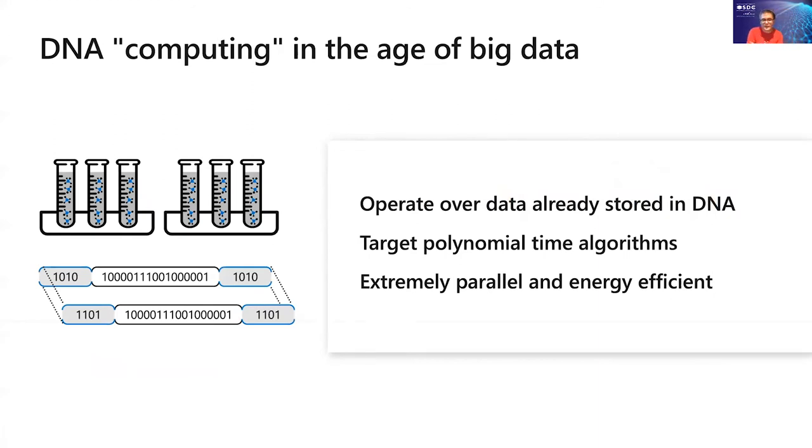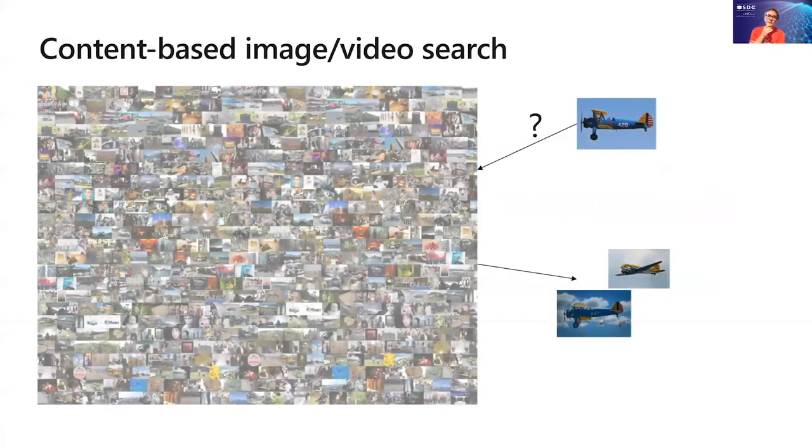But what we've been thinking about is that what would DNA computing look like in the age of big data? So what we wanted here is essentially operate on data already stored in DNA. We want to target polynomial time algorithms like search. And if we did that, we would potentially have an extremely parallel and energy efficient way of manipulating information in a molecular form. The problem that we decided to explore is content-based image and video search for several reasons. First, this is very bandwidth intensive, and it's also a key primitive in systems today. So content-based image and video search exists today, and it's used in a variety of day-to-day systems. You can do image-based similarity search, say, in Google or Bing. And also this similarity search is a key primitive in machine learning systems that is part of a bigger flow.